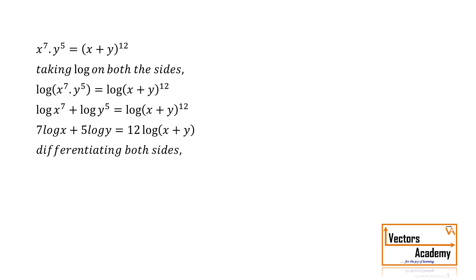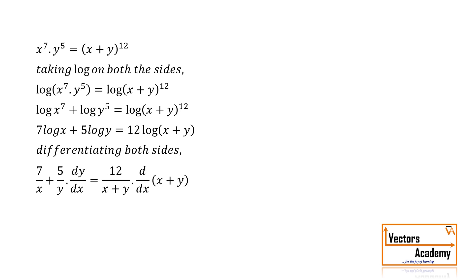Now that we have simplified, we take the derivative on both sides with respect to x. We get: 7 times 1/x plus 5 times 1/y times dy/dx is equal to 12 times 1/(x plus y) into the derivative of x plus y, by the chain rule.